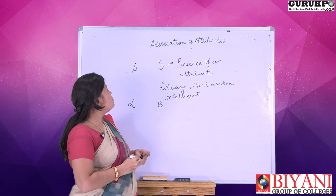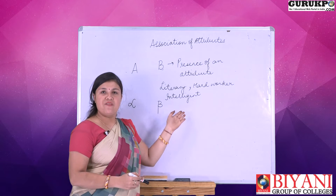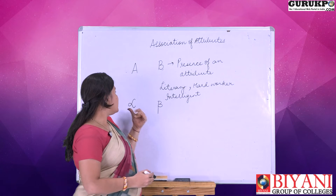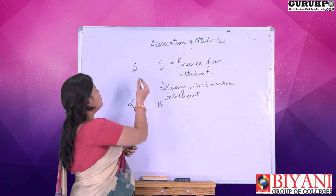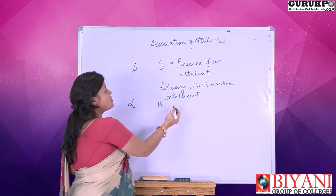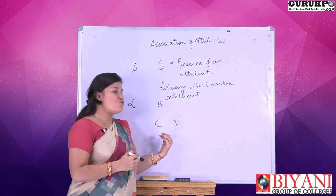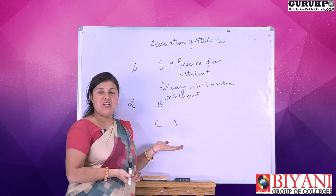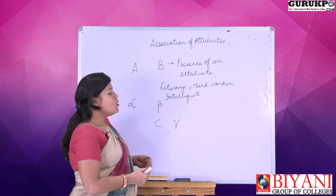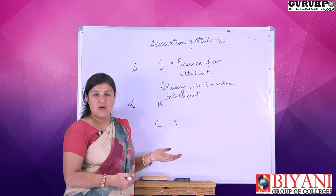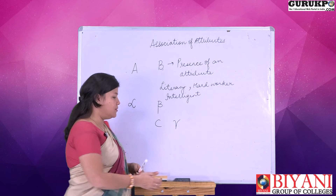So, A and B are used to show the presence of an attribute. In reverse, alpha and beta are used to show absence. If there is a third attribute C, then C shows presence and gamma is used to show the absence of that attribute. Moving forward, we will now discuss how to frame a 9-square table.